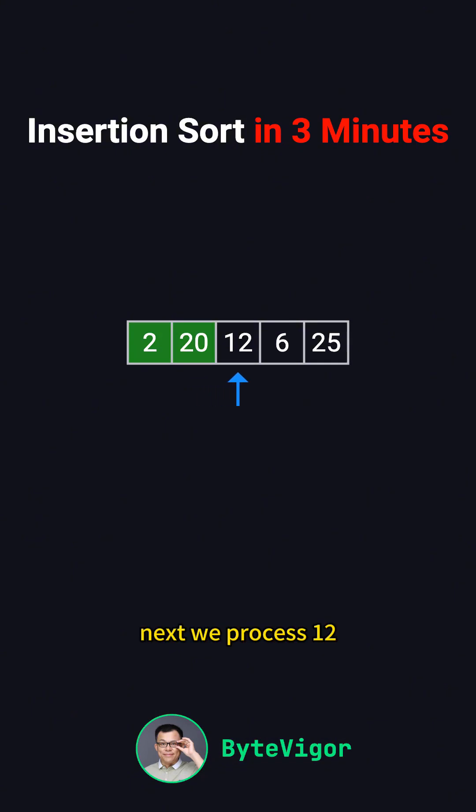Next, we process 12. We compare it with 20. Since 12 is smaller than 20, we shift 20 to the right. Now we compare 12 with 2. This time, 12 is larger, so we don't need to move 2. We insert 12 between 2 and 20, resulting in 2, 12, 20, 6, 25.